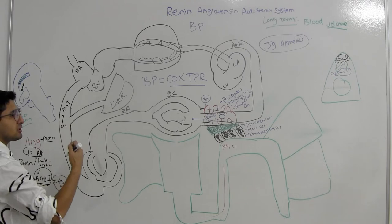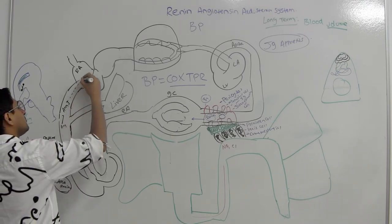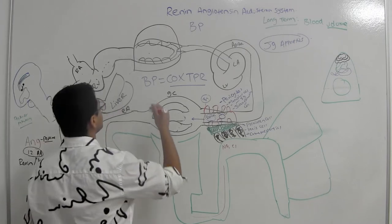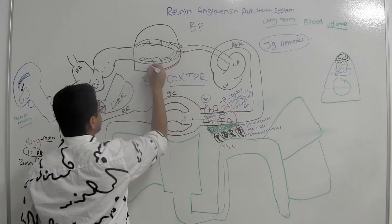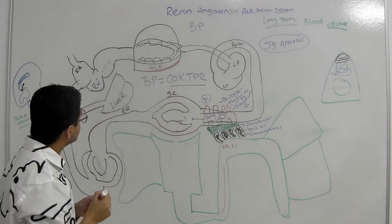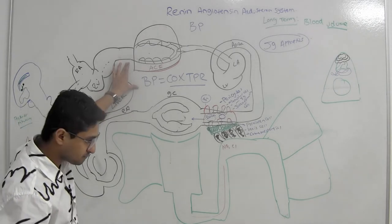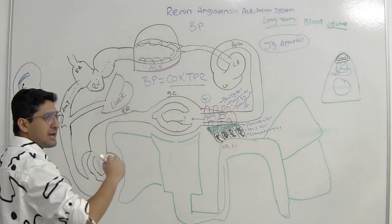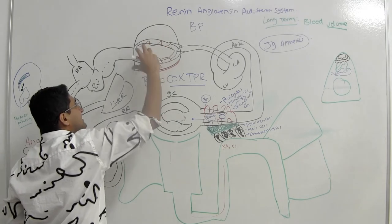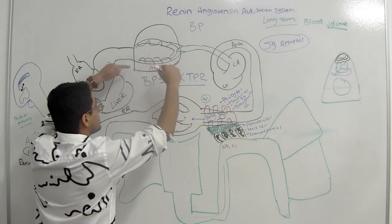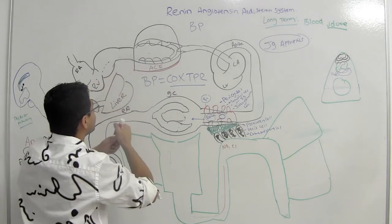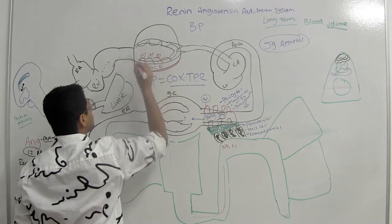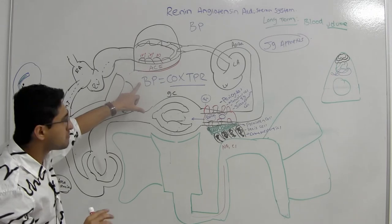Angiotensin I travels from the right atrium, right ventricle, through the pulmonary circulation, and reaches the lungs. There it encounters the ACE enzyme — angiotensin converting enzyme. ACE is located on the surface of endothelial cells of the pulmonary capillary beds. ACE cleaves two more amino acids from the C-terminus of angiotensin I, producing the 8 amino acid (octa-peptide) angiotensin II.